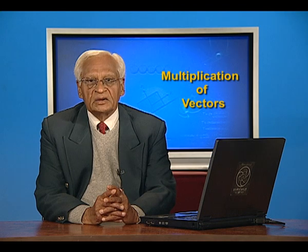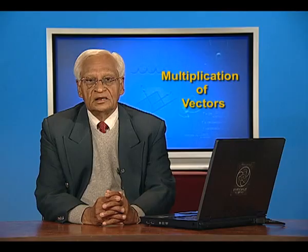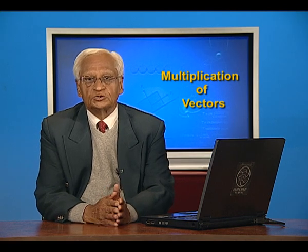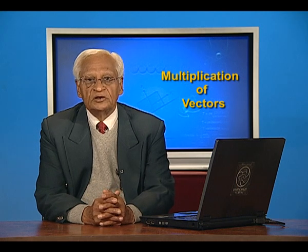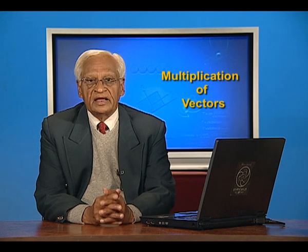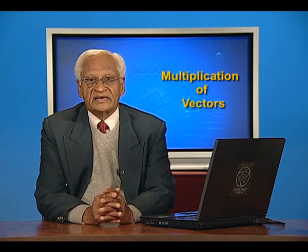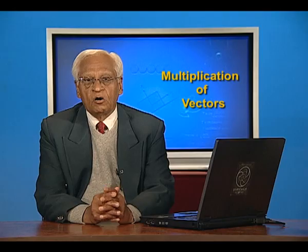Let us take the multiplication of a vector by a scalar first. If we multiply a vector by a scalar k, then the product is a vector whose magnitude is the absolute value of k times the magnitude of vector a. When I say absolute value, I mean both negative and positive have been reduced to positive. That is, if k is minus 3, its absolute value is 3; if k is plus 3, its absolute value is also 3. So, when I multiply vector a by scalar k, the magnitude of the vector is increased k times.